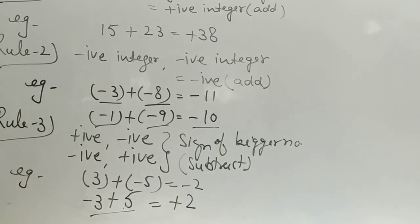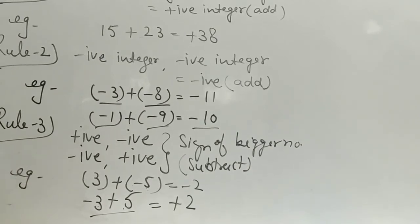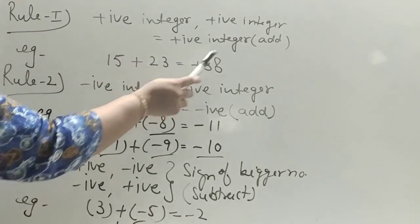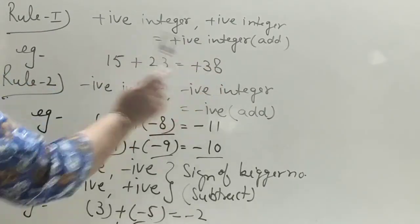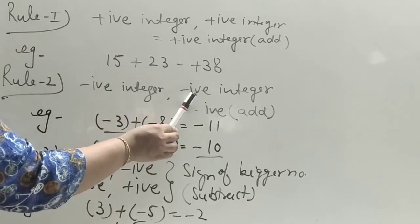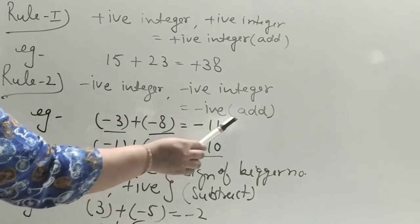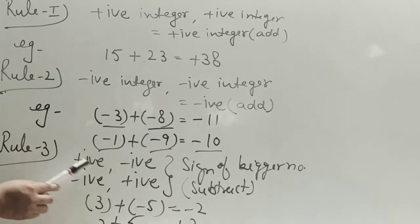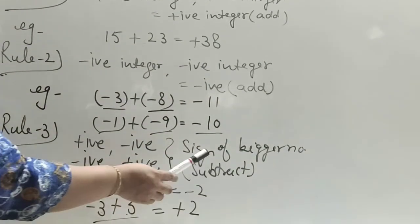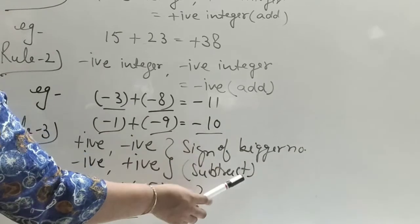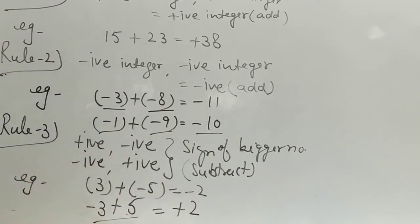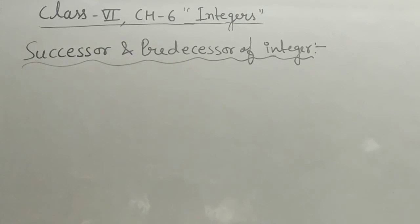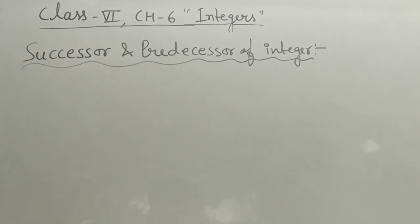To summarize the rules: if both are positive, add both numbers with a positive sign. If both are negative, add both numbers with a negative sign. If one is positive and one is negative, take the sign of the bigger number and subtract the two numbers.